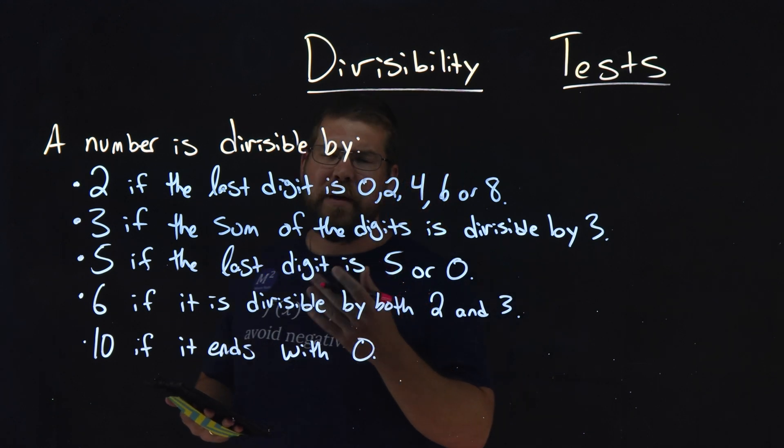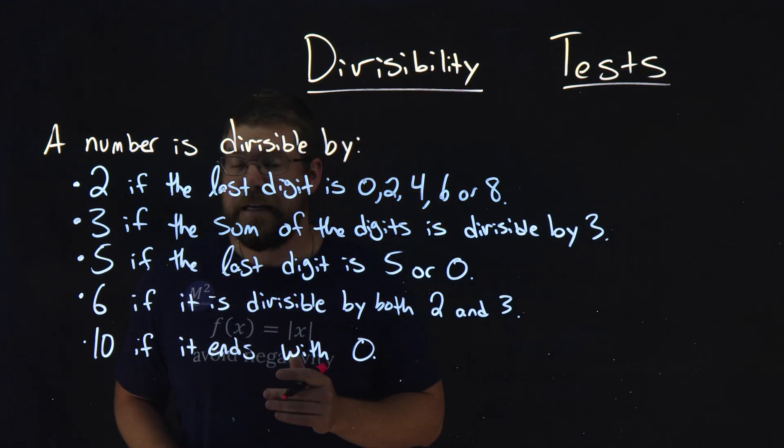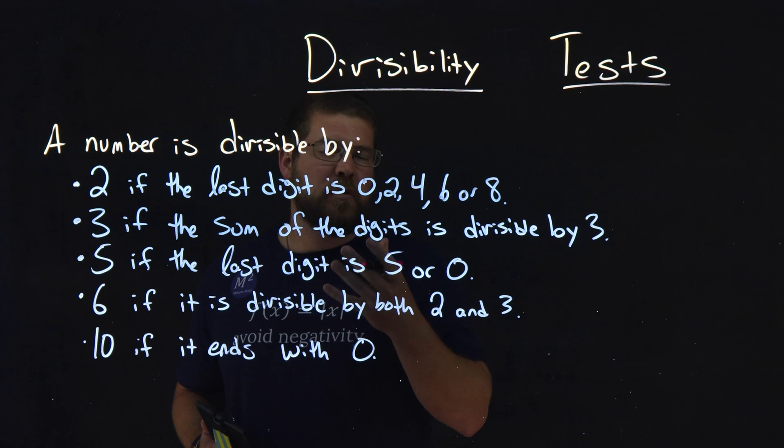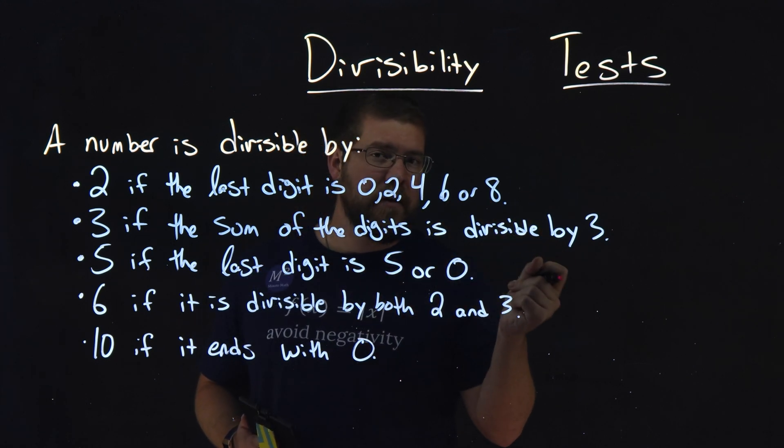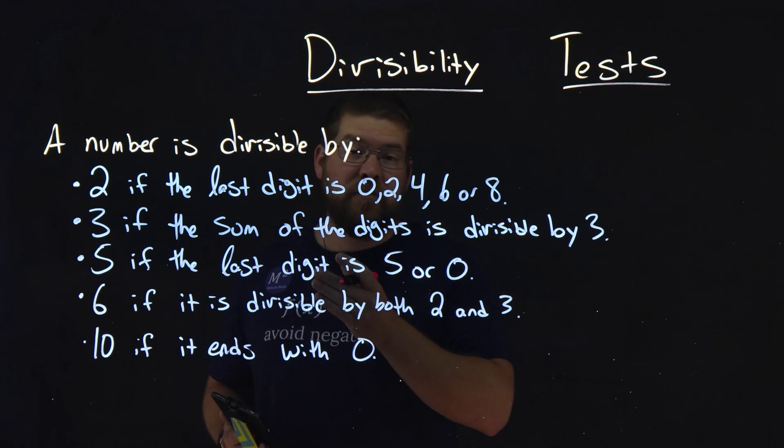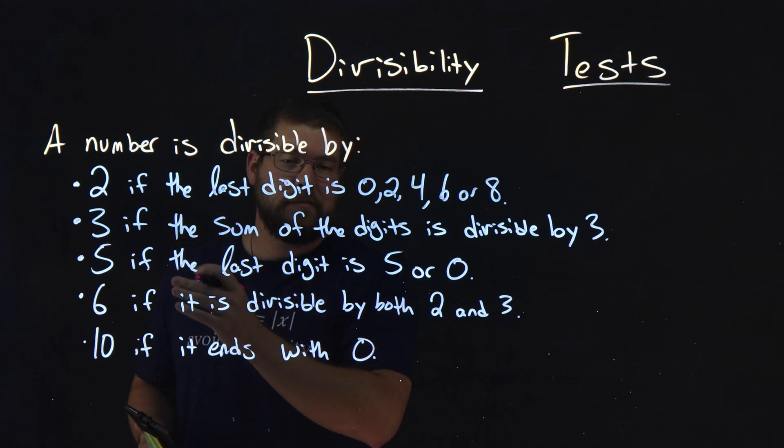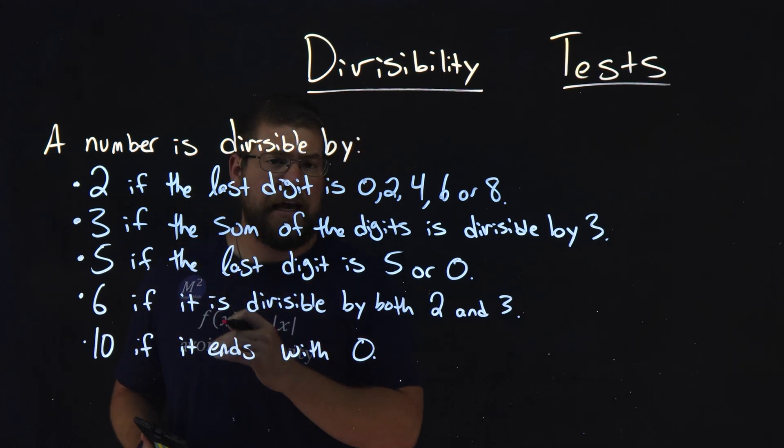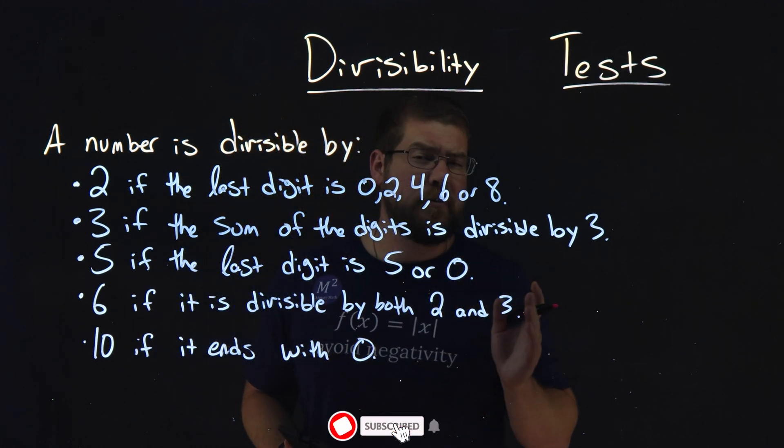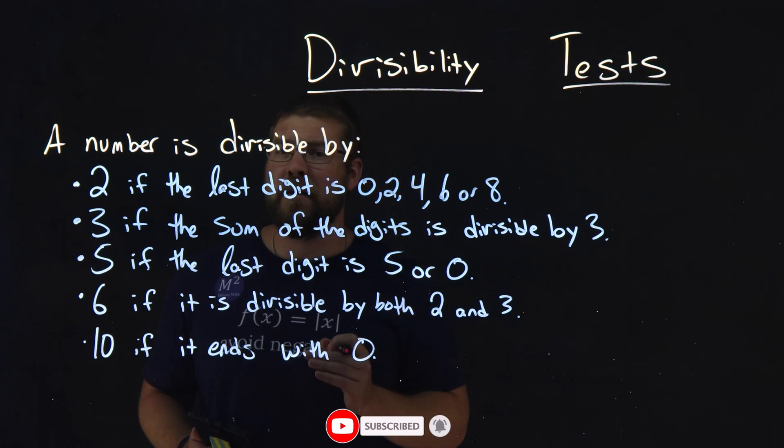And so for the first basic numbers we have here: 2, 3, 5, 6, and 10, we have some basic rules that we can follow to quickly see if these numbers are divisible by each one of these numbers. Eventually this will just become second nature and you won't even think about it.